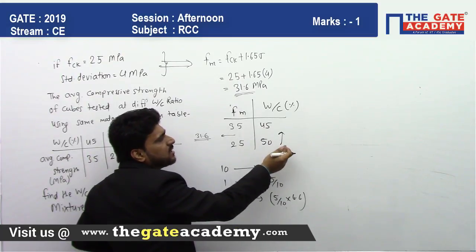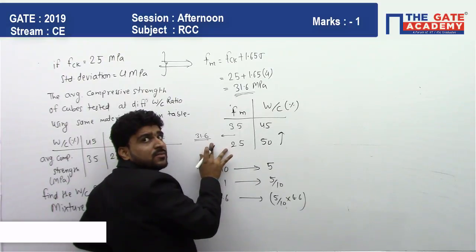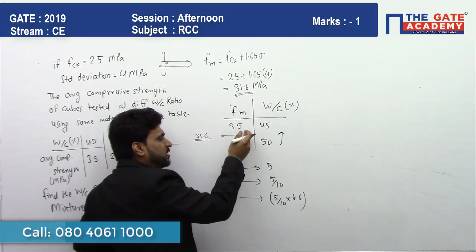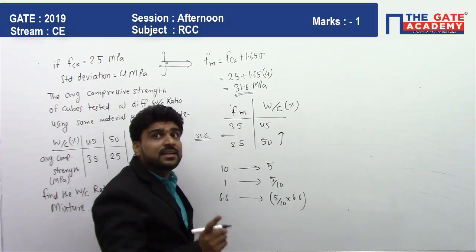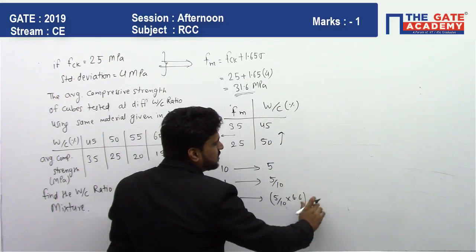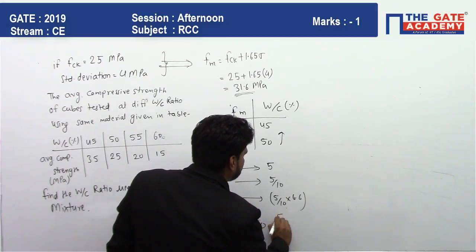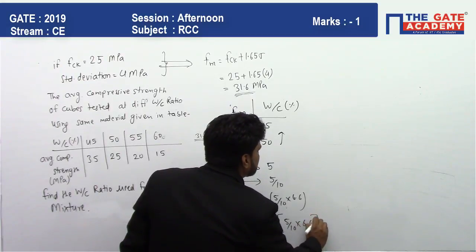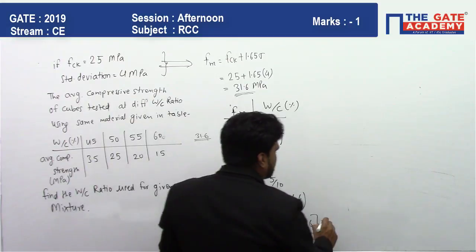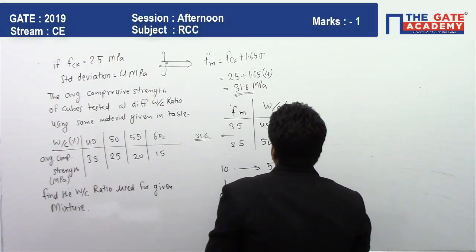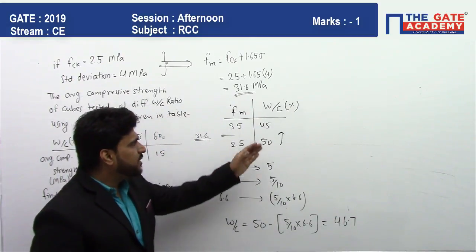So here, what is our difference? We want to increase it by 6.6, so what will be the decrement here? 5 by 10 into 6.6 will be the decrement. Decrement means 50 minus this value. So your new water content will be 50 minus this value, or you can do interpolation by your own method. So you will get 46.7% water to cement ratio. Interpolation can be done in this way also, like 10 decreasing here, 5 increasing in opposite side.